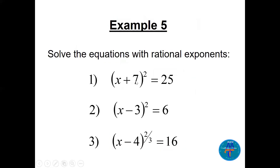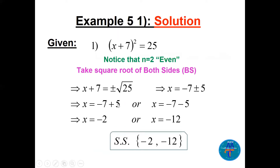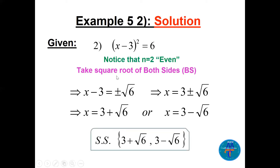Example 2 (medium): (x - 3)² = 6. Again n = 2, so take the square root of both sides: x - 3 = ±√6. Moving -3 to the other side: x = 3 ± √6. Note the difference from Example 1: √25 simplifies to 5, but √6 cannot be simplified further, so we leave it as 3 + √6 and 3 - √6.